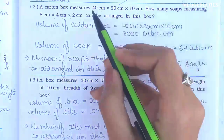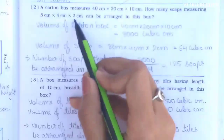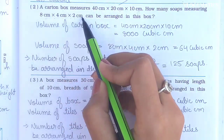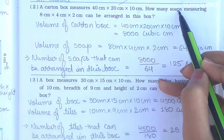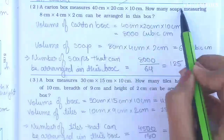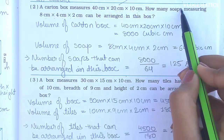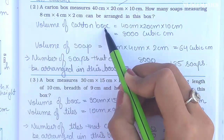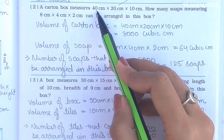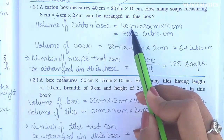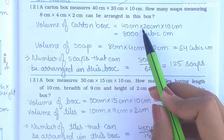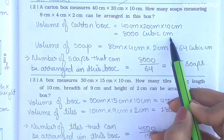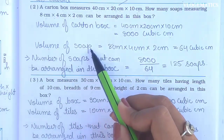This is the same approach as question 1. The carton box is a cuboid and the soap is also cuboid-shaped, with 3 different measurements: length, breadth, and height. We find the volume of each and then divide. Volume of carton box = 40 cm × 20 cm × 10 cm = 8000 cubic cm.